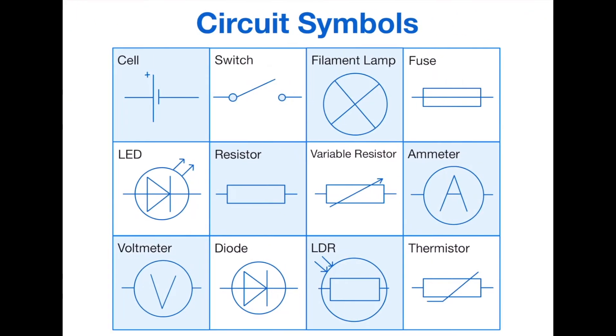First of all, we have circuit symbols. There are 12 circuit symbols here that you need to remember and become very familiar with. The types of questions that can come up in exams can literally ask you to just say what they are, and it's easy marks in a test. We have a cell, a switch which can be open or closed, a filament lamp which is just a cross like a light bulb, and a fuse.